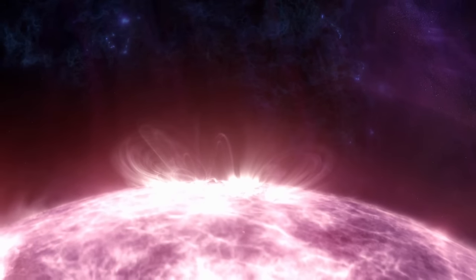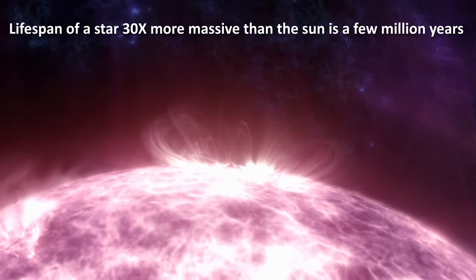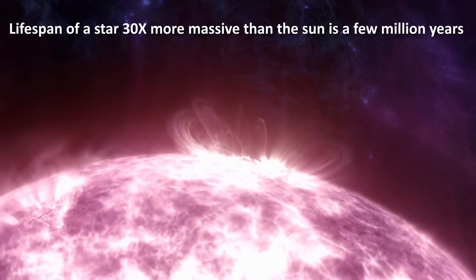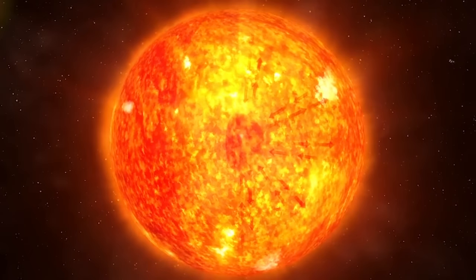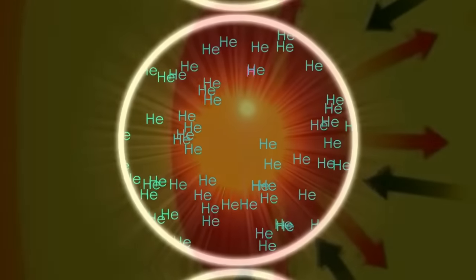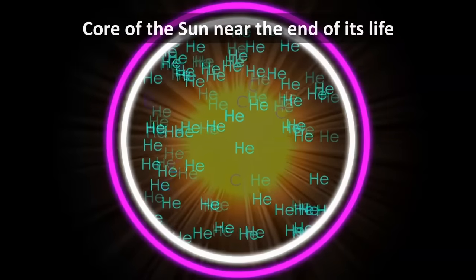But stars that are about 30 times more massive than the Sun last only a few million years. Eventually, the core of the star runs out of hydrogen. When that happens, the star can no longer hold up against gravity.